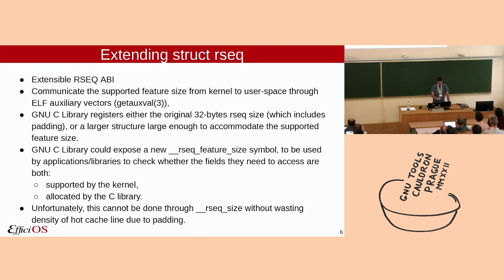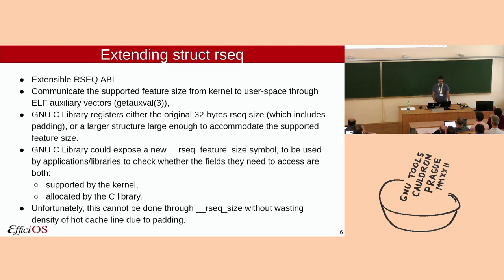The original rsec size was 32 bytes. The GNU C library could register that size or a larger size large enough to accommodate the kernel's supported feature size. The GNU C library currently exposes an rsec_size symbol to applications, but it has no meaning in terms of supported feature set. I would like to add a new rsec_feature_size symbol. Having thought about this extensibility scheme ahead of time, the rsec_size would have been the feature size.